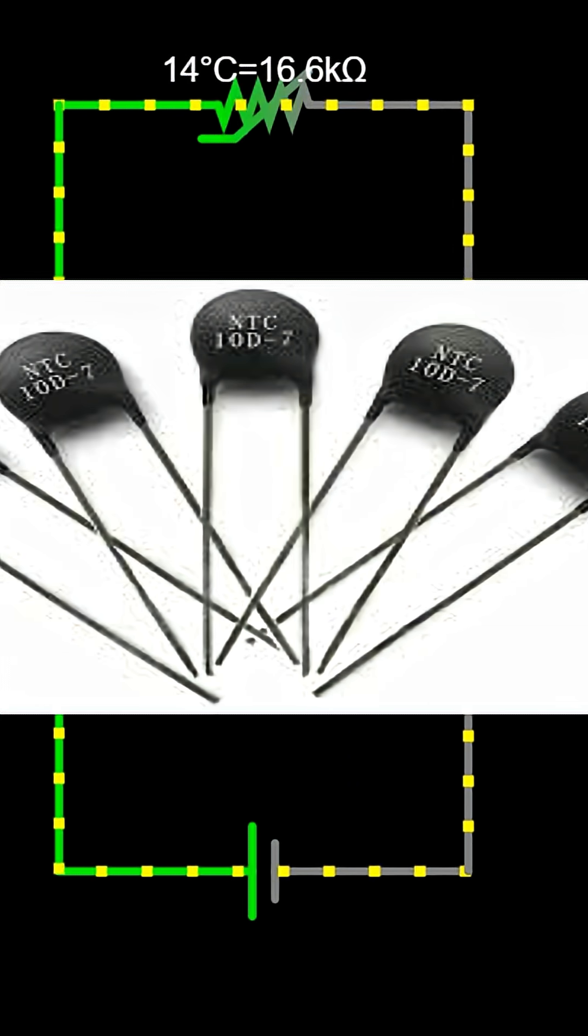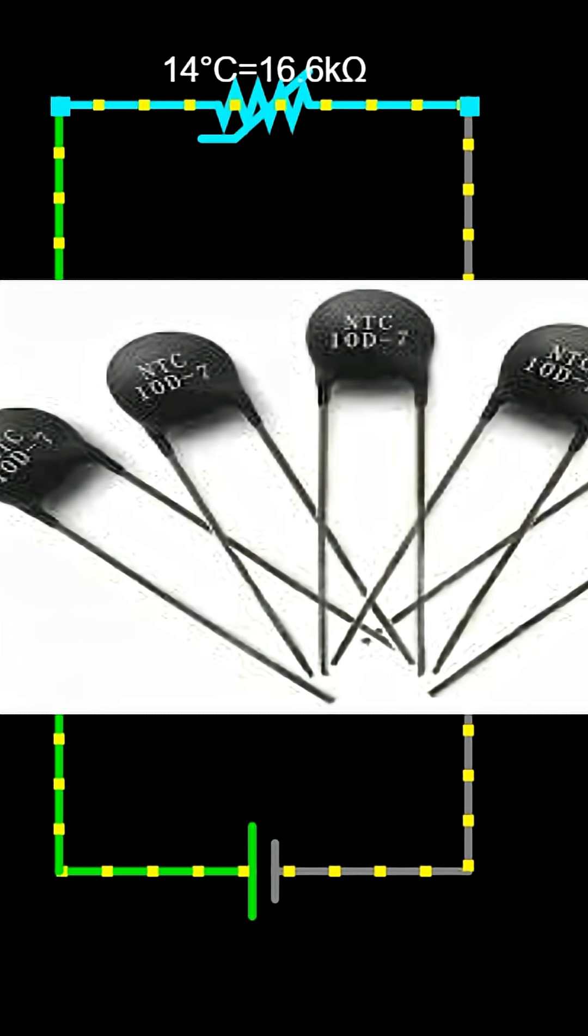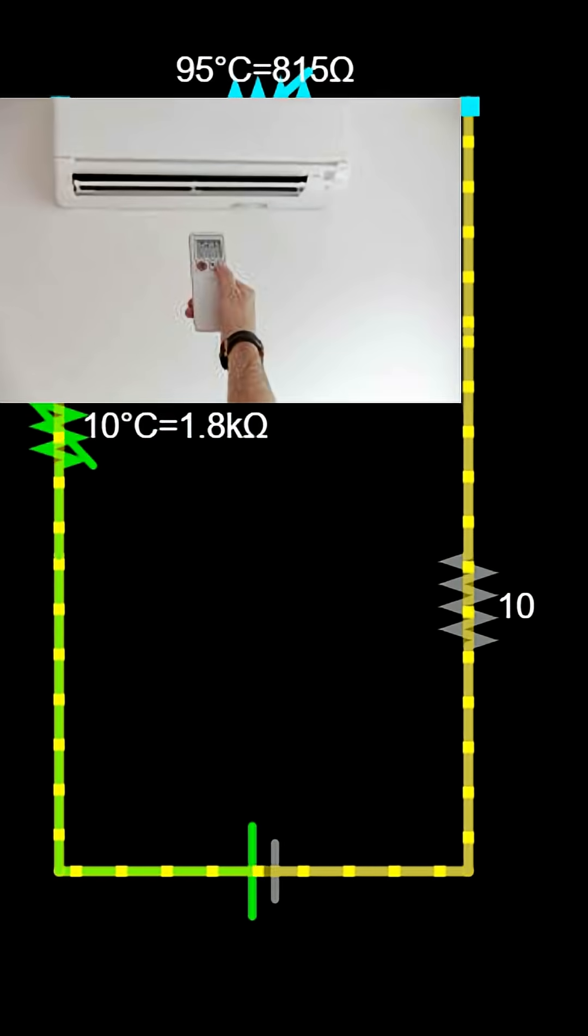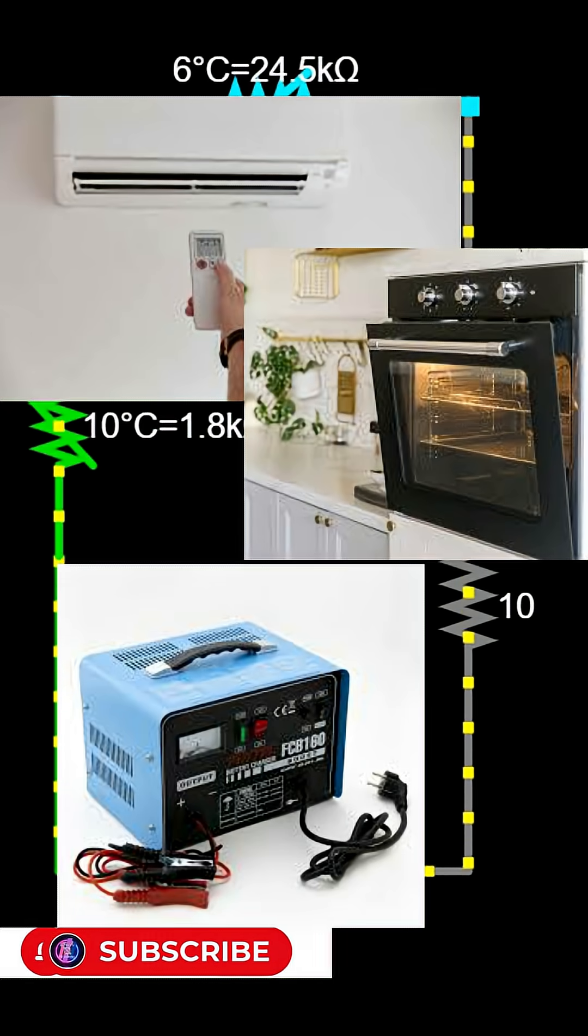Because of this property, thermistors are used as temperature sensors in many devices, like air conditioners, ovens, battery chargers, and computer fans.